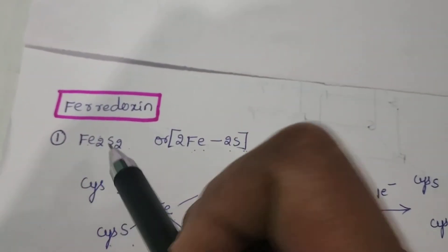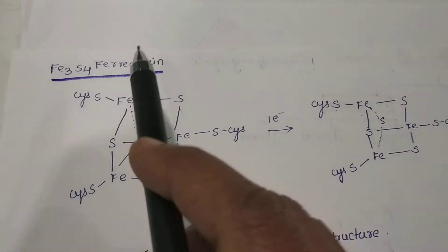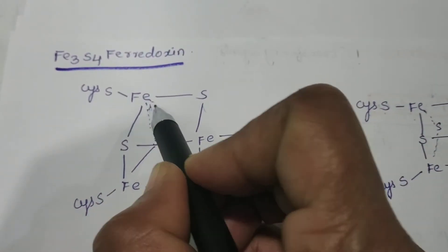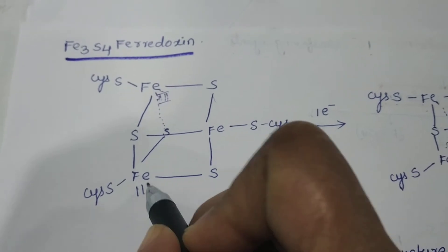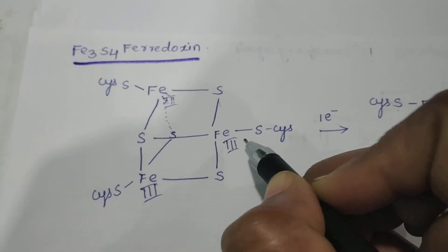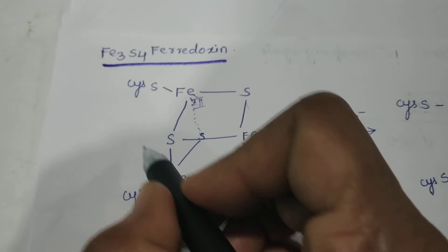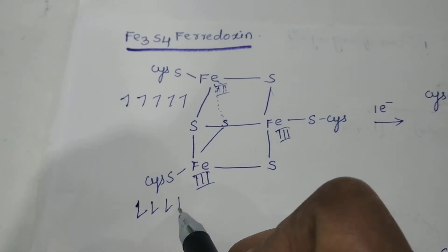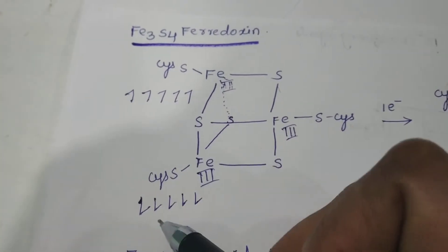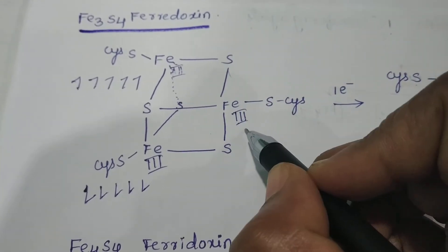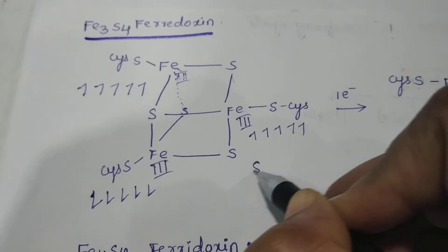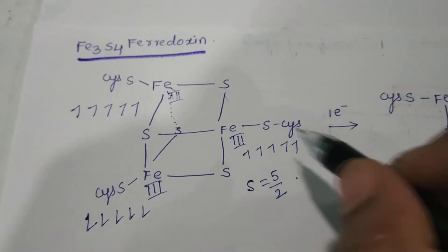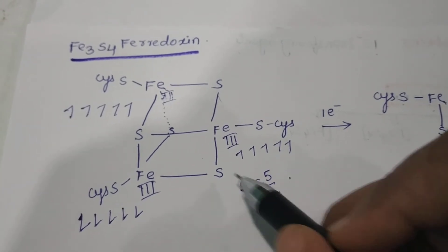So the first type is Fe2S2, and the second type is Fe3S4 ferredoxin. In Fe3S4, all three Fe atoms are in the +3 oxidation state, each having five electrons. Two irons' spins cancel each other, leaving the third iron with five unpaired electrons, giving S equal to five-half (5/2). This is paramagnetic and ESR active.